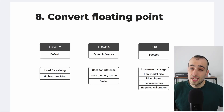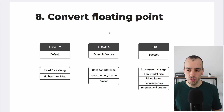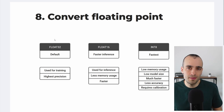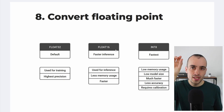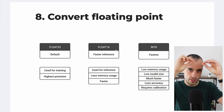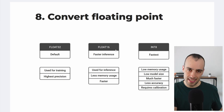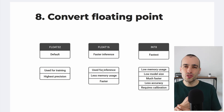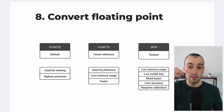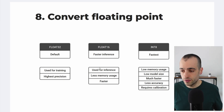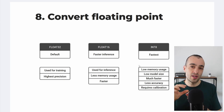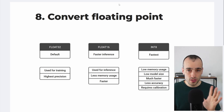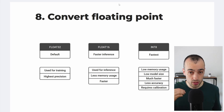The eighth and final factor is floating point precision. By default, PyTorch models use float32 — 32 bits per value, mainly used for training. Float16, called half precision, uses only 16 bits per value, making the model half the size in GPU memory and significantly faster, with almost no difference in accuracy — this is the recommended format for inference. INT8 offers even less precision and is mainly used for edge devices or CPU-limited environments.